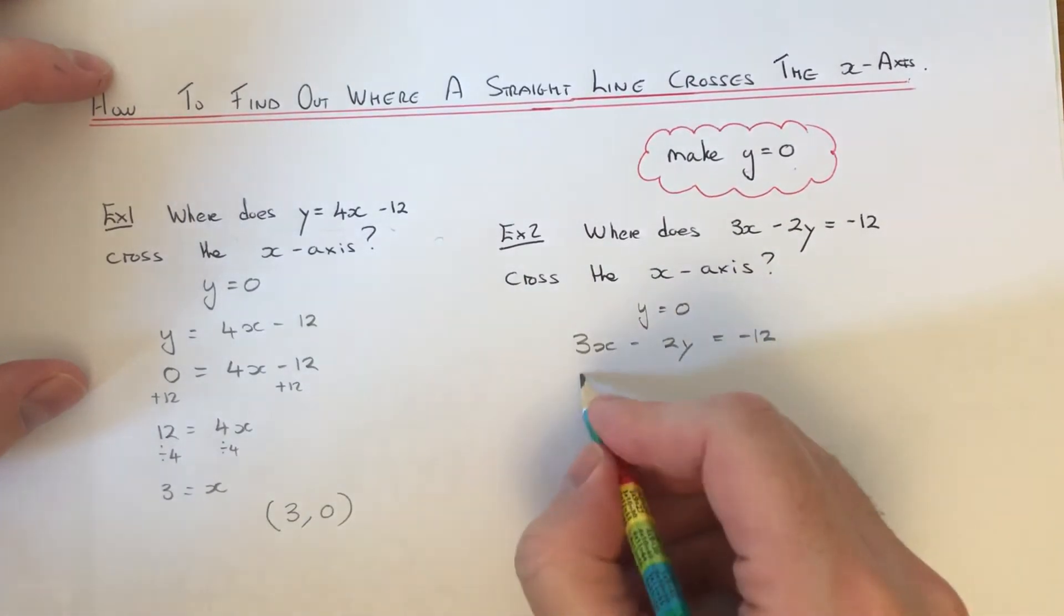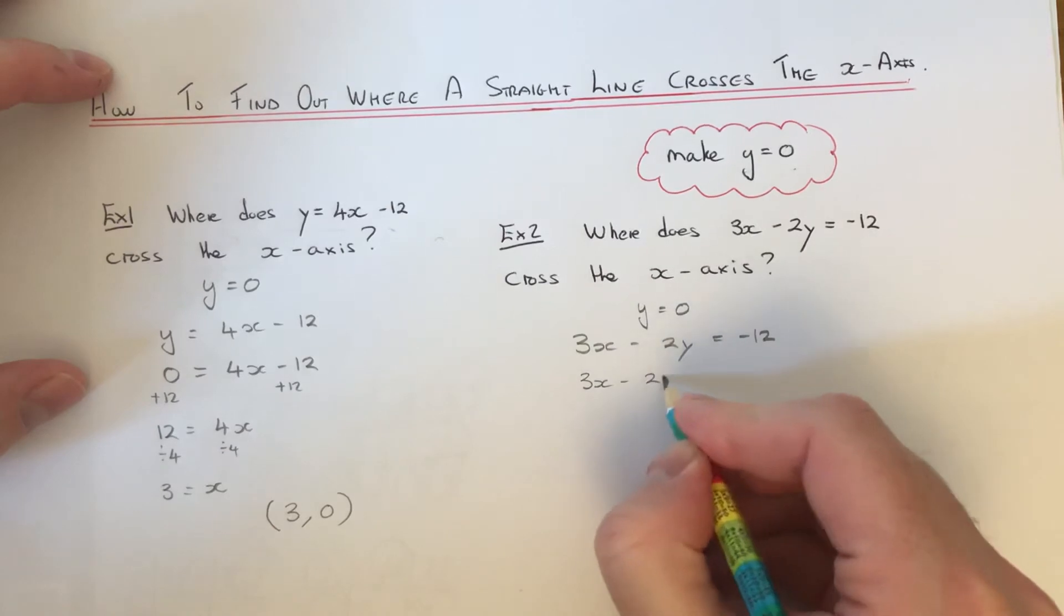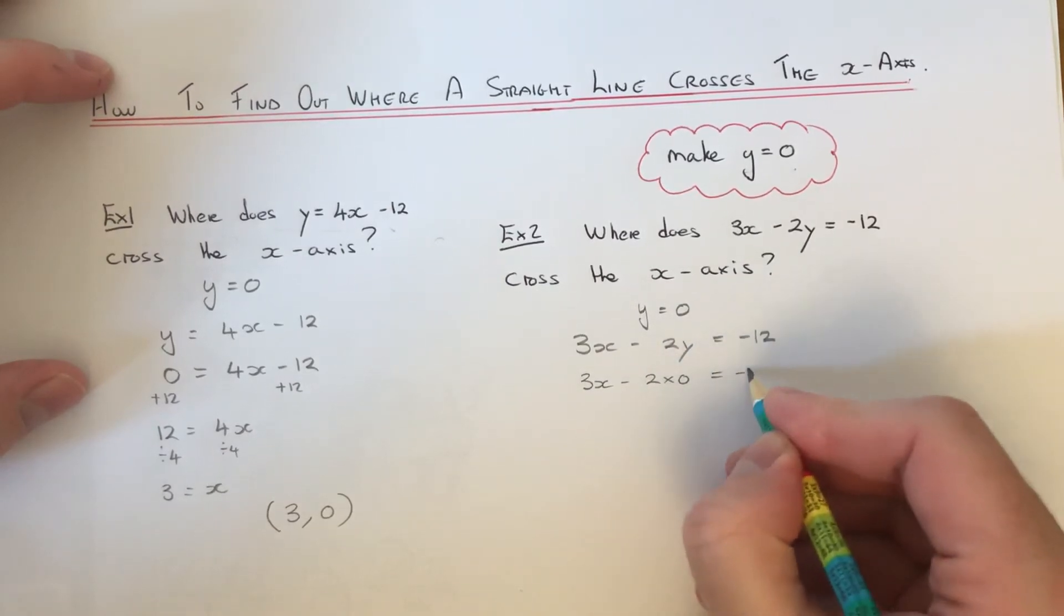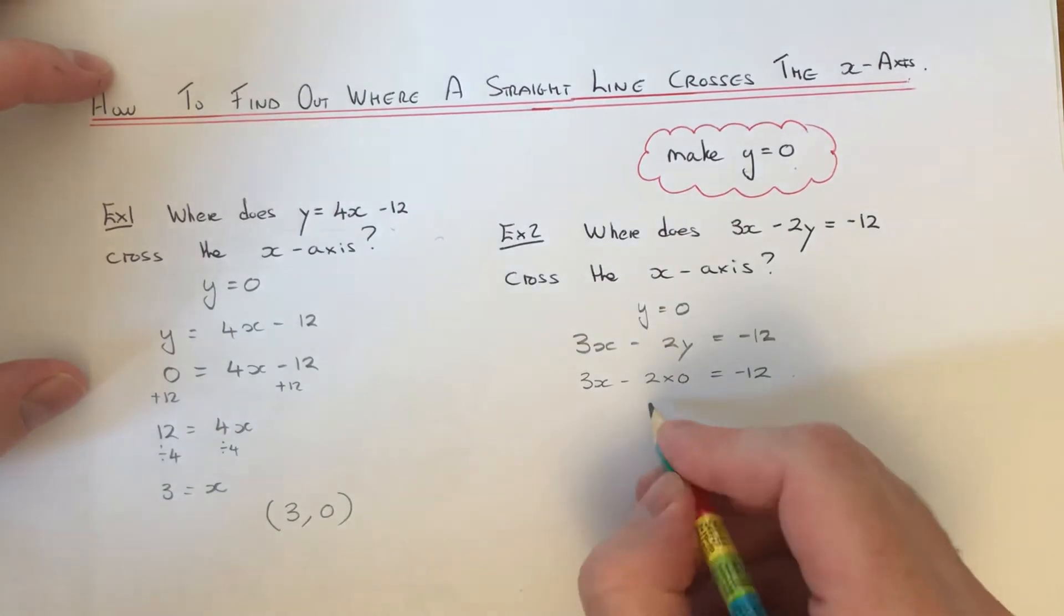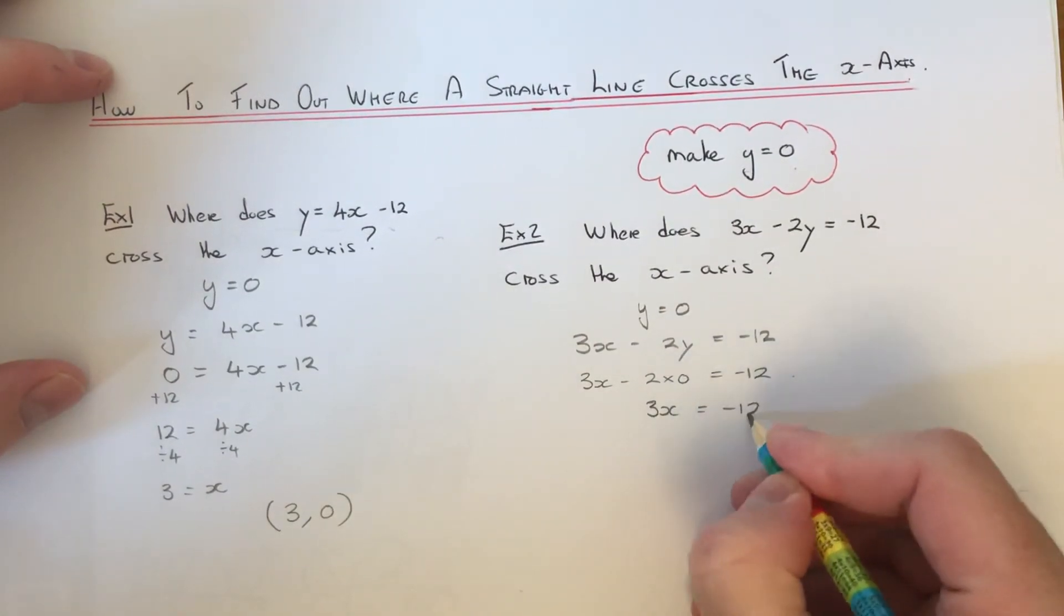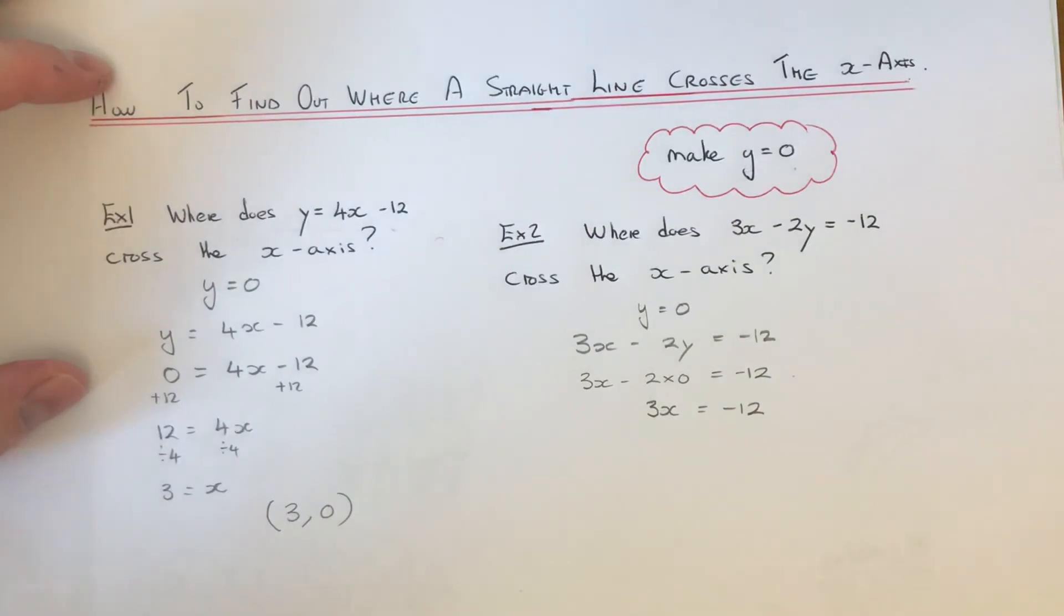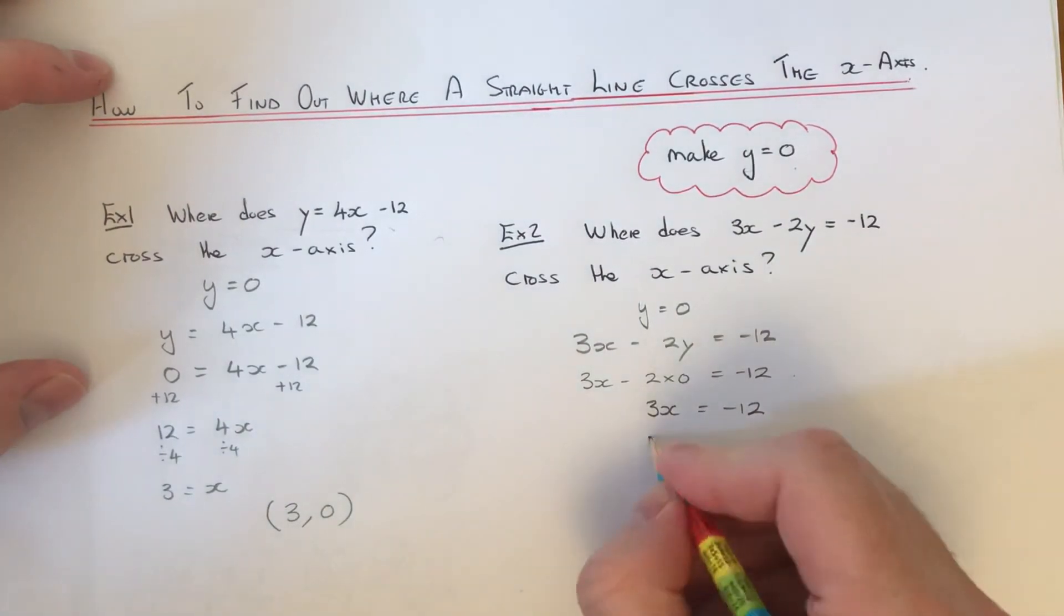It'll be 3x minus 2 times 0 equals minus 12. Minus 2 times 0 is nothing, so that disappears. We end up with 3x equals minus 12.